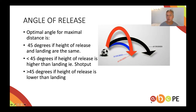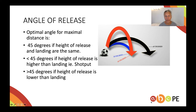The angle of release is also dependent upon the height of release and the height of landing. In soccer, where the height of release — the ground — is the same as the height of landing — the ground — then generally 45 degrees is the best angle. But if that's not the case, for example in shot put where the height of release is at the shoulder and the landing point is the ground, then the angle should be below 45 degrees.